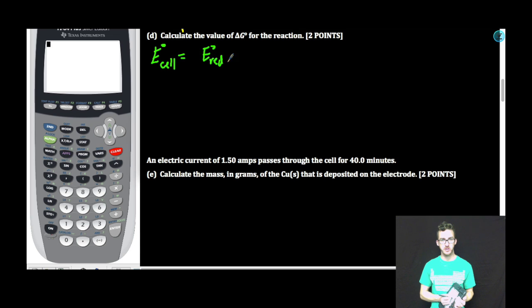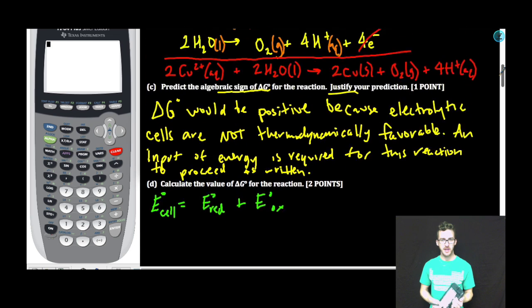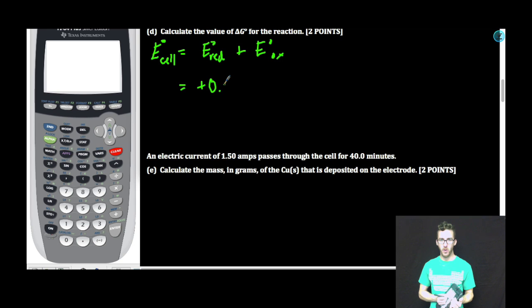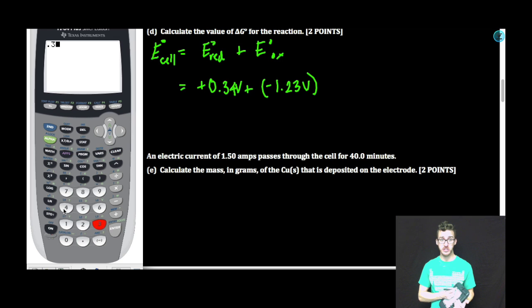E cell equals reduction potential plus oxidation potential. As I look back at my chart, recognize that we have decided that the copper ion is being reduced and that water is being oxidized. So although I will use the value directly for the reduction of copper 2 ion, I need to flip the sign of my reduction potential here, because we have flipped the equation to show this as an oxidation half reaction. Positive 0.34 plus negative 1.23. They're both volts. Be a better teacher, Mr. Boylan. Don't forget your units. Let me use my calculator just to play it safe.